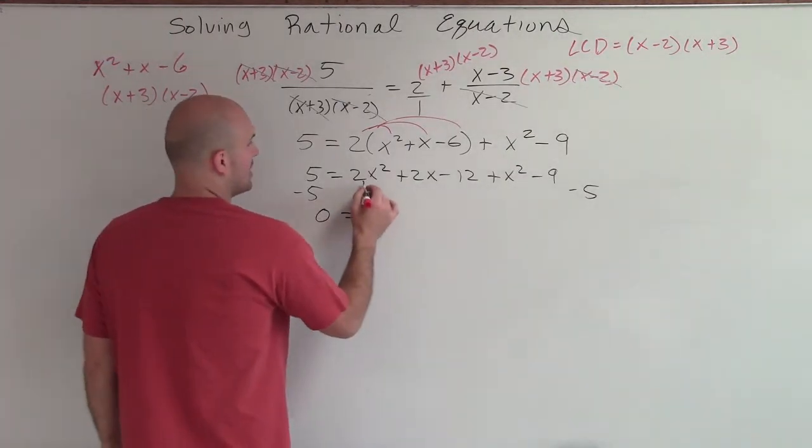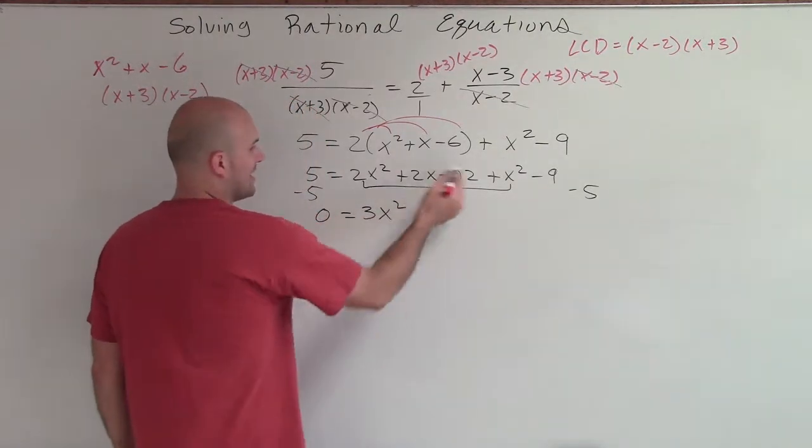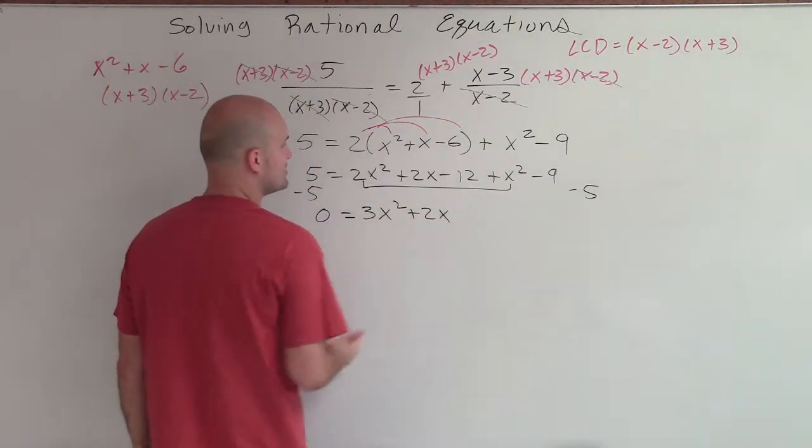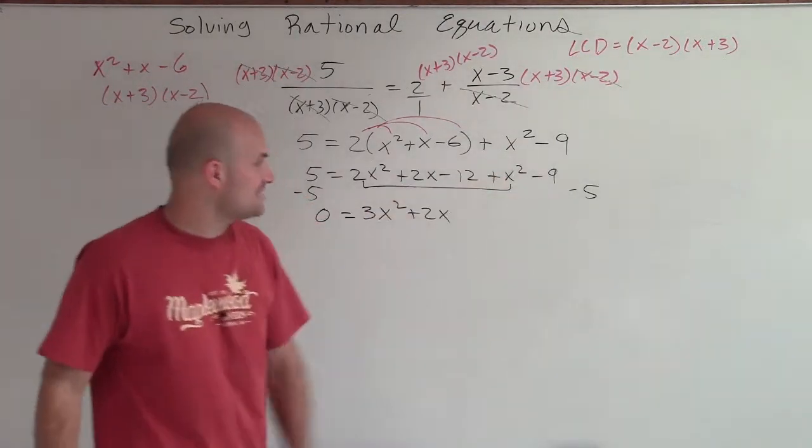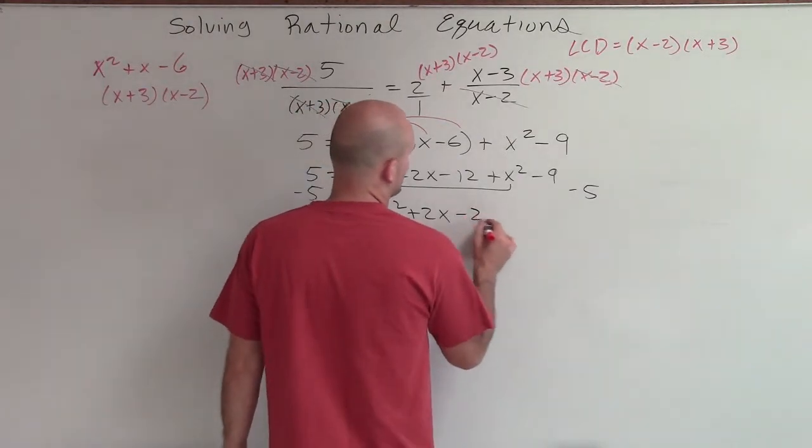So we have 0 equals, well, I can combine the 2x and the x to give us 3x squared. I can't combine the 2x with anything, so plus 2x. And then I have negative 12 minus 9 is going to be negative 21. Minus 5 will be a negative 26.